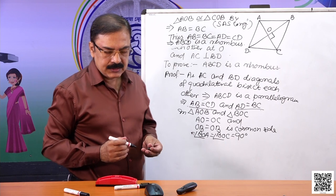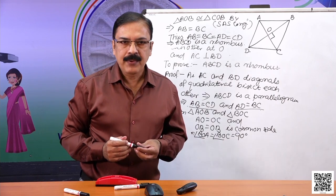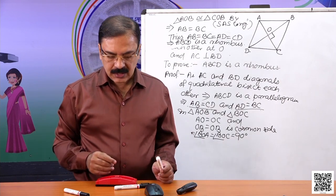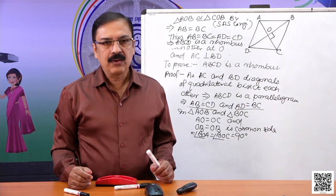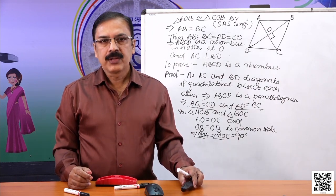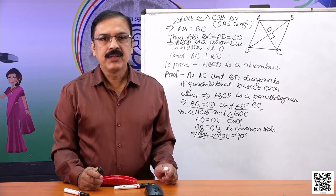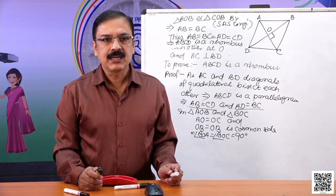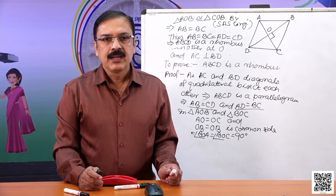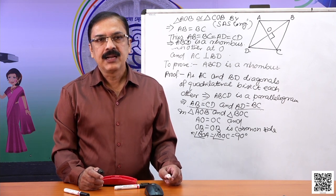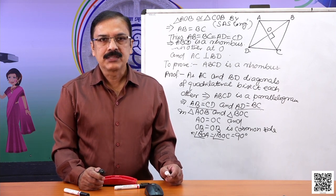Thus, by applying the properties of parallelogram, we can prove that if the diagonals of a quadrilateral bisect each other at right angles, then it is a rhombus.